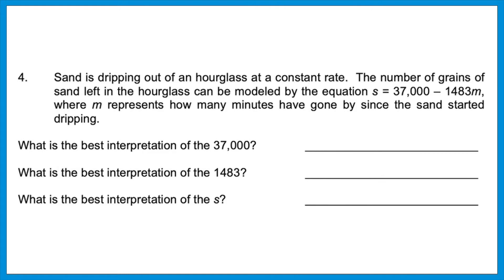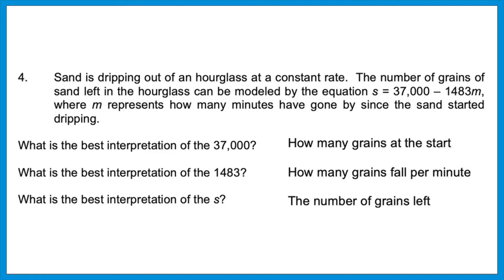This is the equation of a line — just backwards, b minus mx. So the 37,000 is the b or y-intercept — how many grains we have at the start. The 1,483 is the slope — that's the rate of change, or how many grains fall per minute. And s is the number of grains left. That's a slightly harder version of Melissa's balloon.